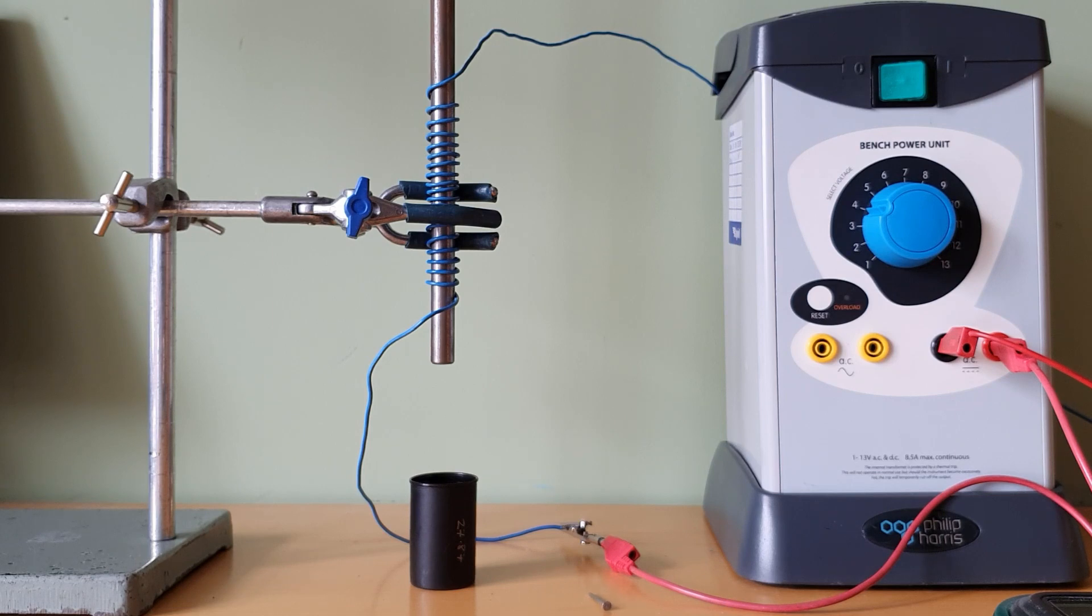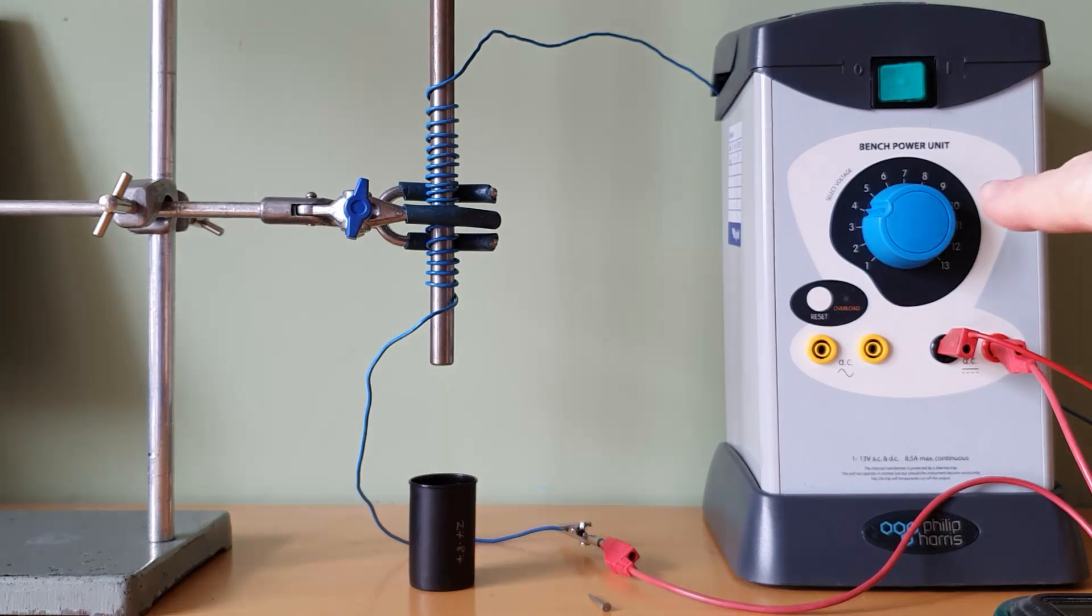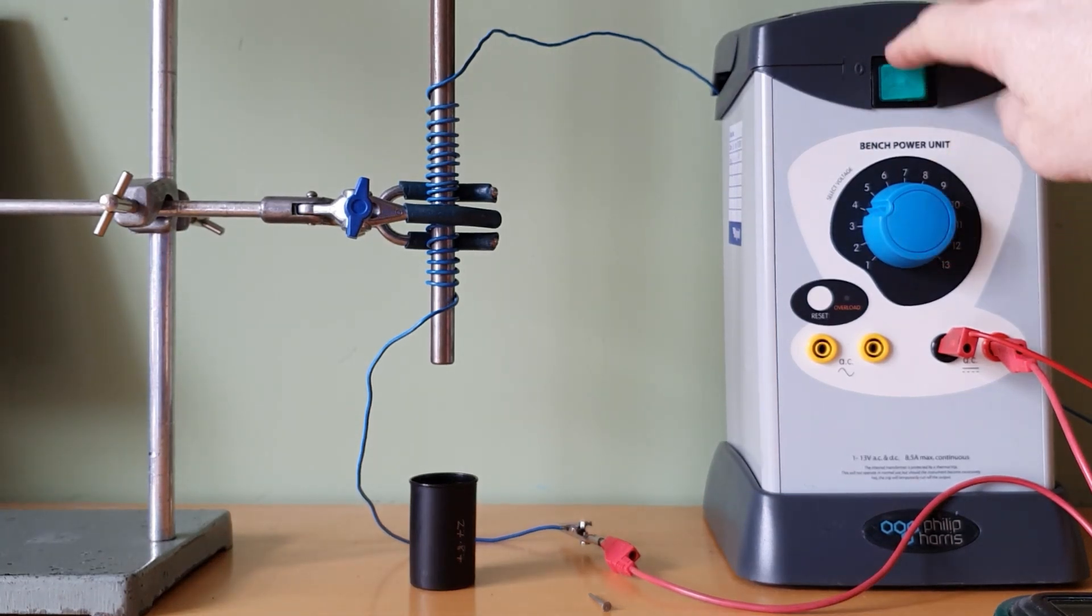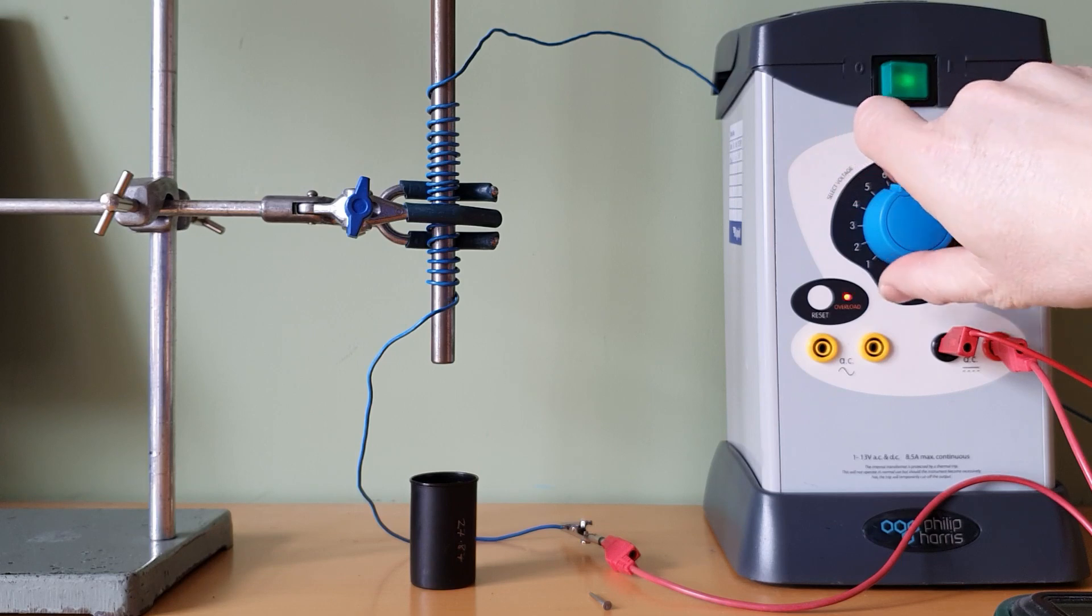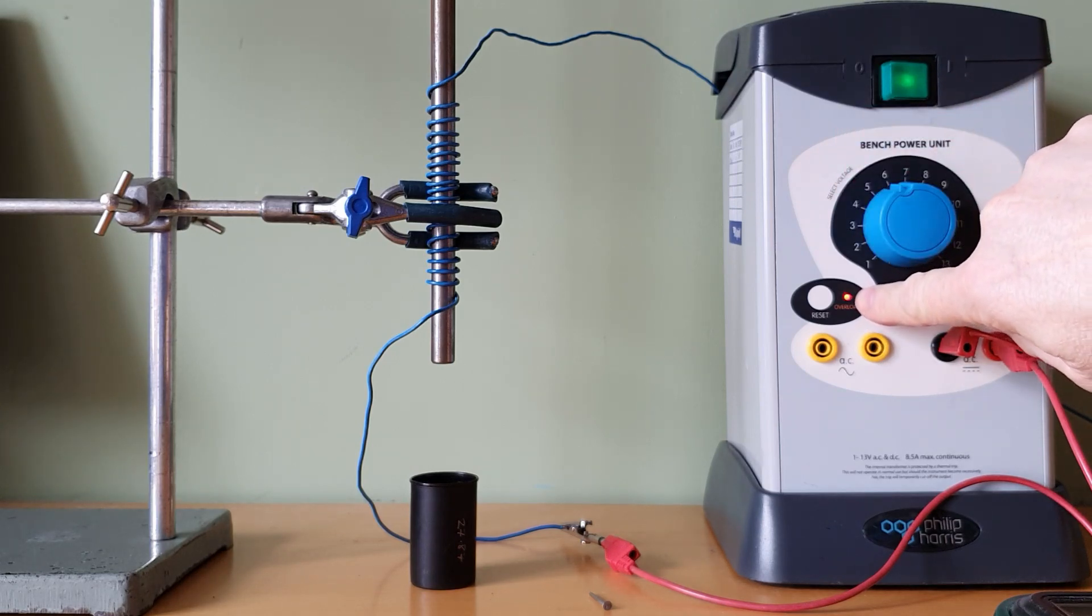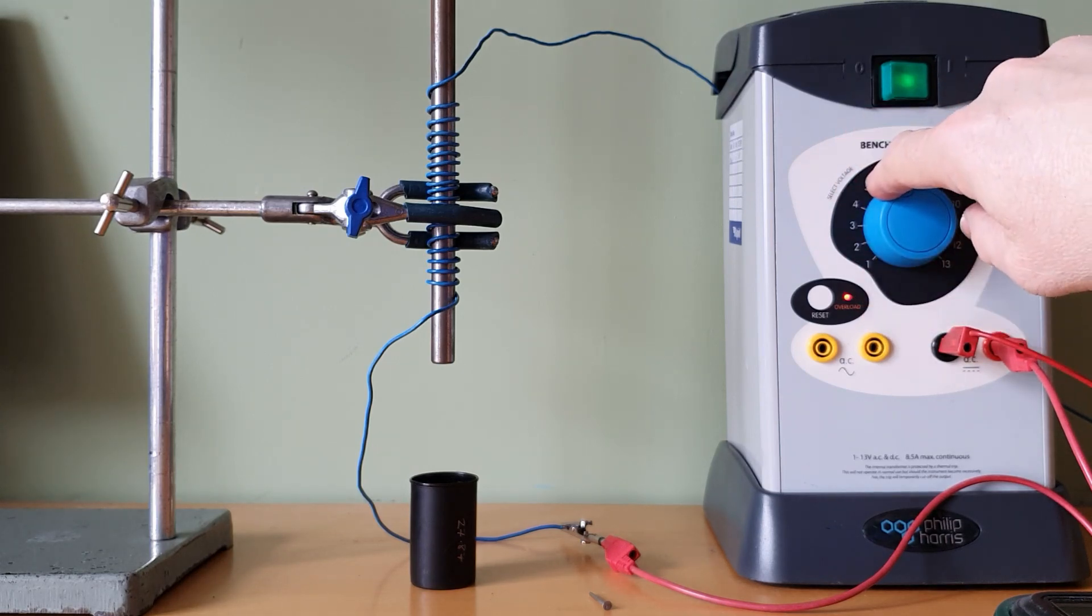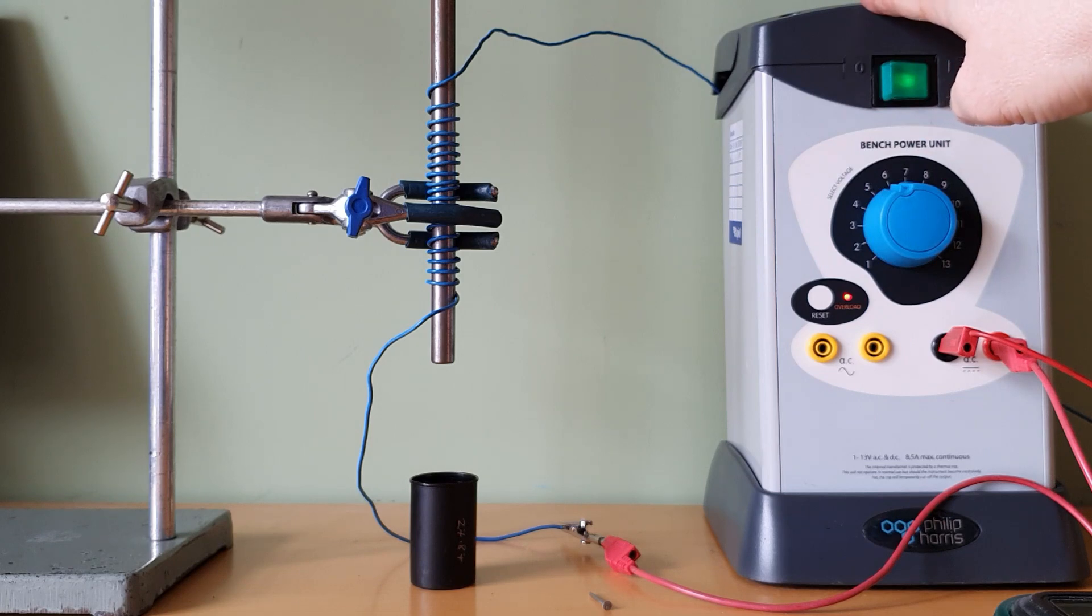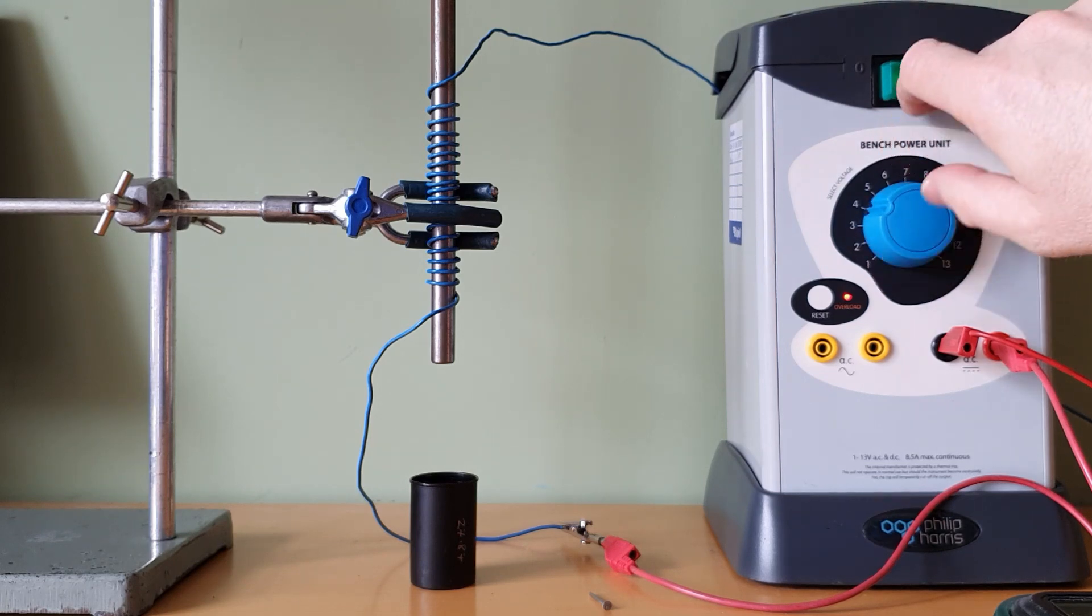Some things to bear in mind whenever you do this experiment. We can't turn up the current too much. If I increase the current too much, watch this light it goes red it's overloaded it's too high a current and the power supply will cut off for safety so we have to keep the current down quite low.